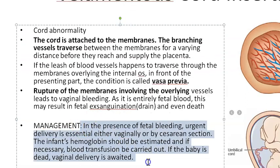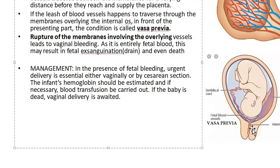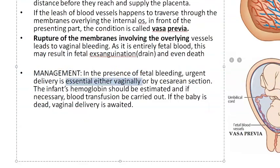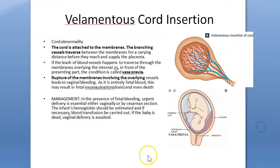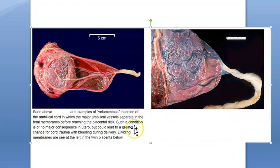If there is fetal bleeding, you have to deliver urgently. If vasa previa was predicted earlier, a cesarean section would have been planned. However, the textbook states that if there is fetal bleeding you deliver either vaginally or by cesarean — but deliver immediately. You then estimate the infant's hemoglobin to see if blood transfusion is required. If the baby is already dead, vaginal delivery is preferred over cesarean.